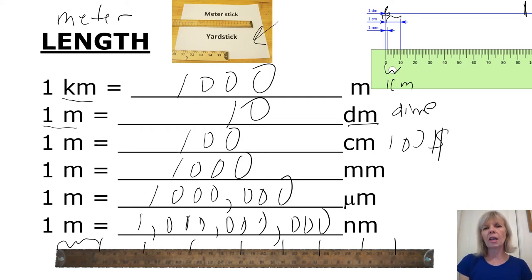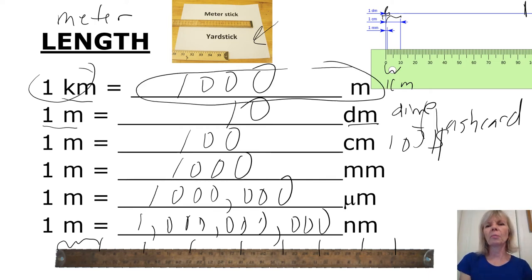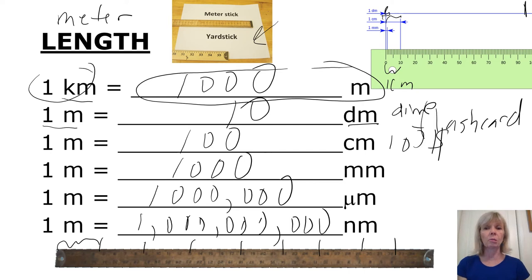I recommend making flashcards to remember these prefixes. On one side of the flashcard you might have 'kilometer,' and on the other side you'd write '1,000 meters' — that's the part you need to remember. These equalities are really important to know. The basic units — meters — can be swapped out for grams or liters, but you need to know all these prefixes. Flashcards are a good way to do that.